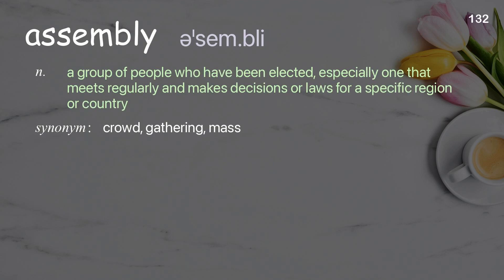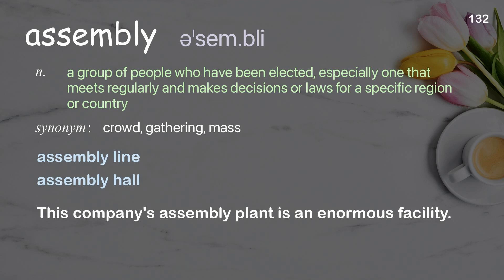Assembly: a group of people who have been elected, especially one that meets regularly and makes decisions or laws for a specific region or country. Examples: assembly line, assembly hall. This company's assembly plant is an enormous facility.